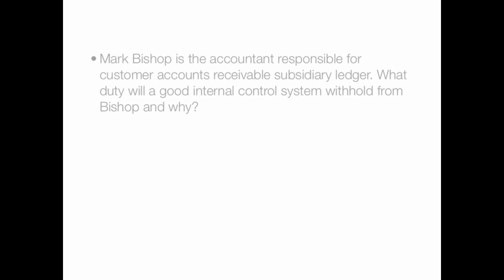Each one of those subsidiary ledger accounts has a customer name attached — account receivable John, account receivable Beal, account receivable Patty — and the balances in all those little subsidiary ledgers feed up to that great big control accounts receivable account. That's what a subsidiary ledger is.